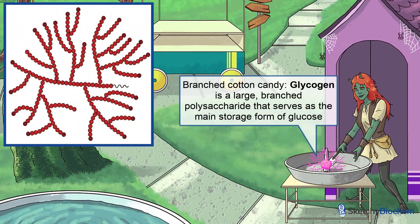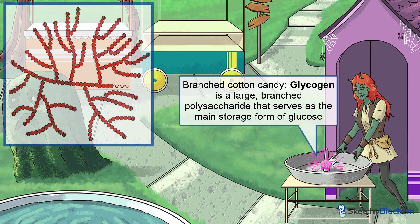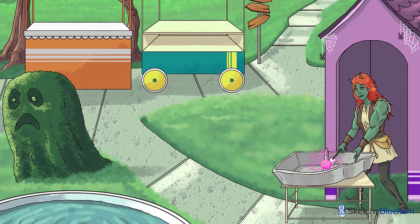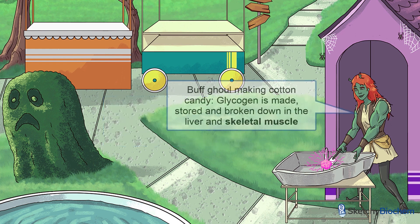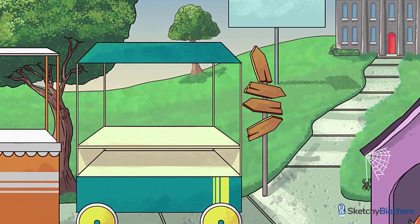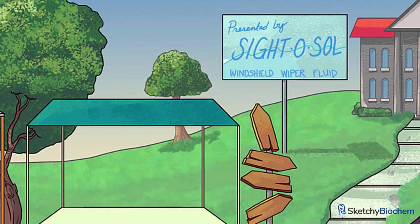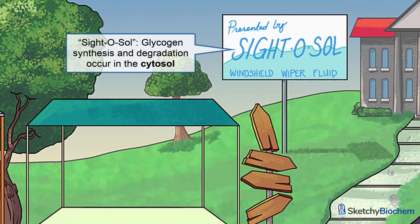Glycogen is a large, branched polysaccharide that functions as the main storage form of glucose, and it looks just like cotton candy. Glycogen is made, stored, and broken down in the liver and skeletal muscle. We've redrawn the cotton candy machine to look like a liver. In the liver, glycogen helps maintain normoglycemia during the first 12 to 18 hours after eating. Skeletal muscle uses glycogen for energy during exercise. Let this billboard for Cytosol remind you that glycogen synthesis and degradation take place in the cytosol.